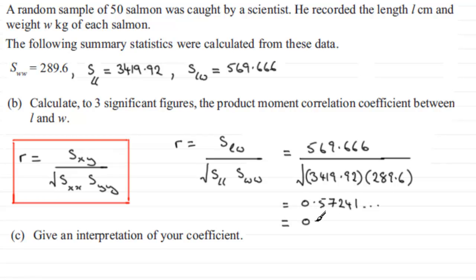Three significant figures. Now for part C, we've got to give an interpretation of our coefficient here. Well, what we would expect is that, remember that if you were plotting a graph of the weight against length, what we're finding is because we've got a positive correlation, it would seem to suggest that the points are scattered something like this about a line of best fit.